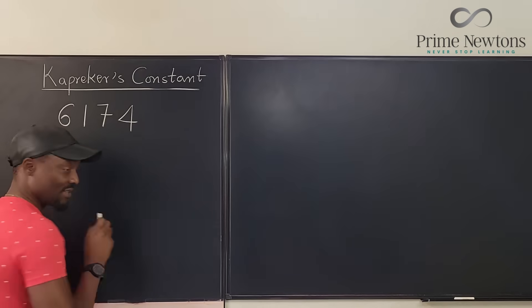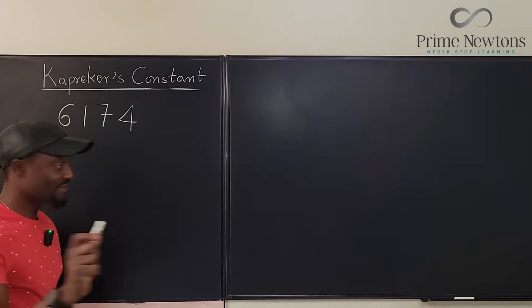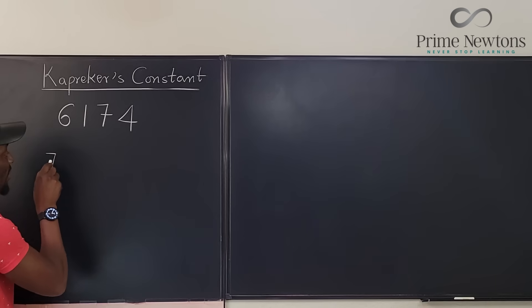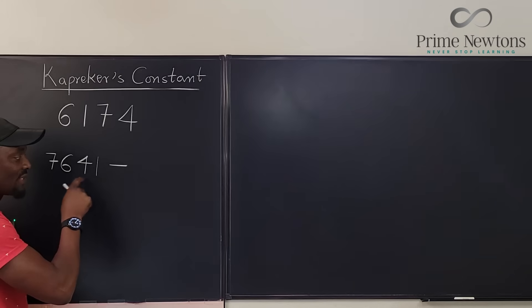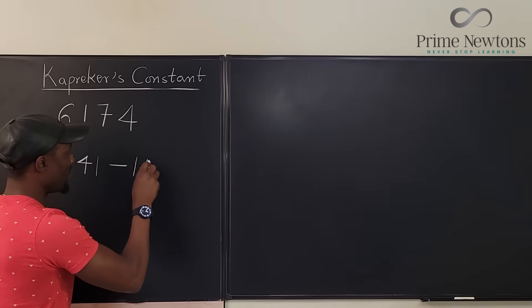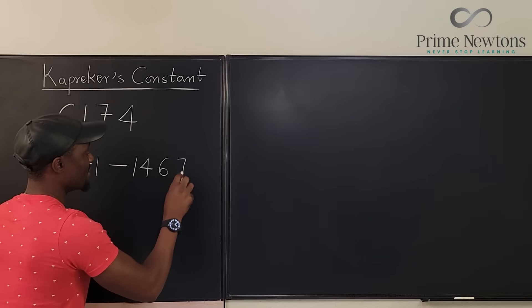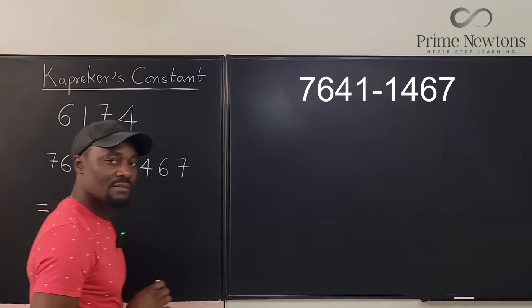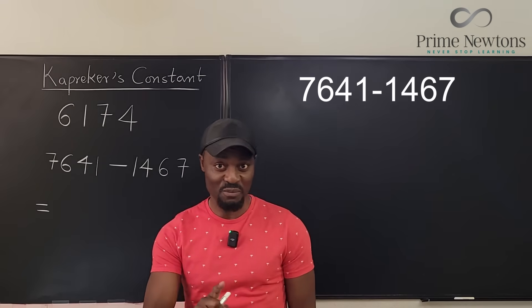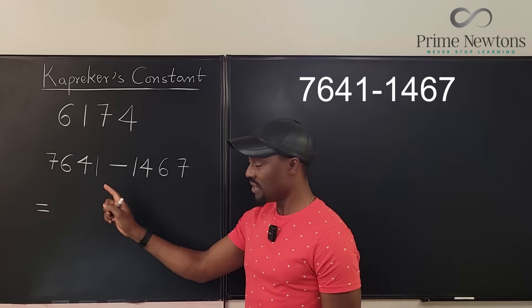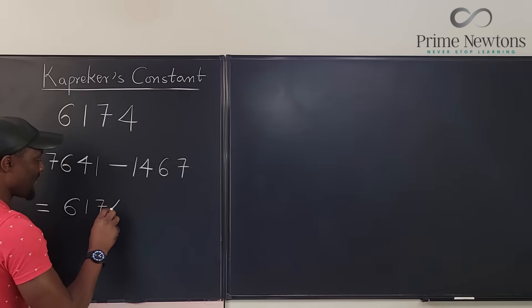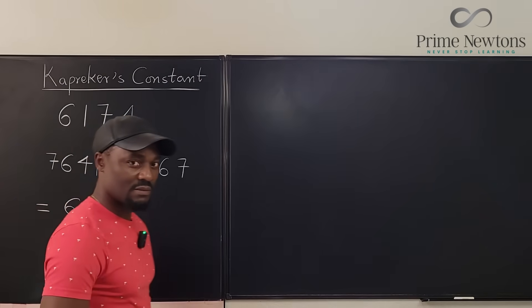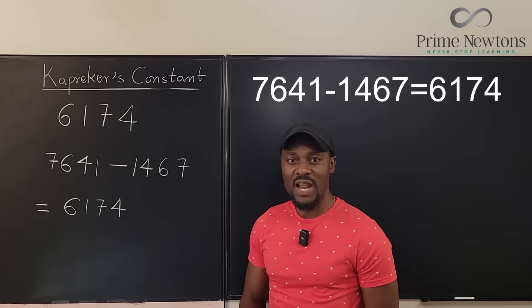And this is the rule. If you subtract the smallest, so 7,641 minus you subtract the smallest, which is 1,467, your answer, that's the crazy thing about this number, it's going to be 6,174.